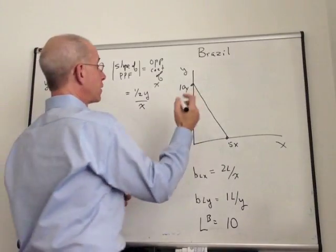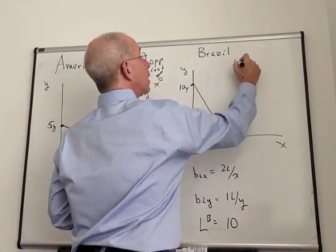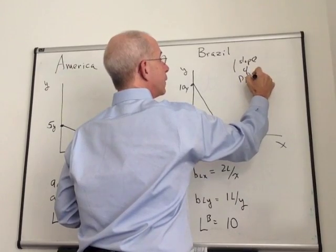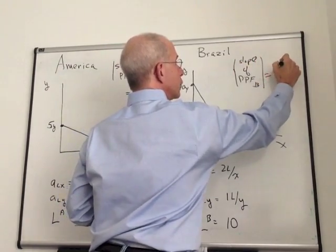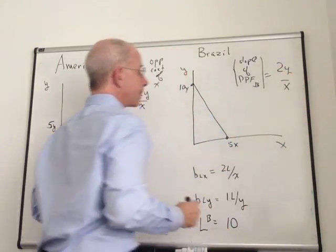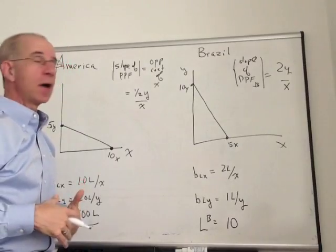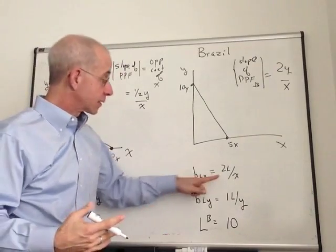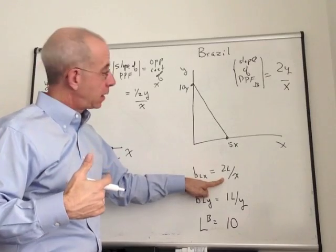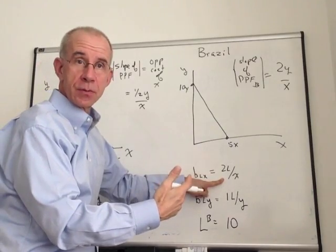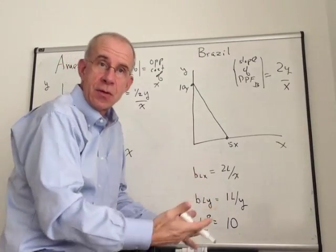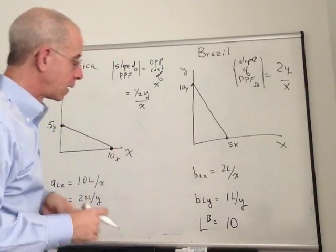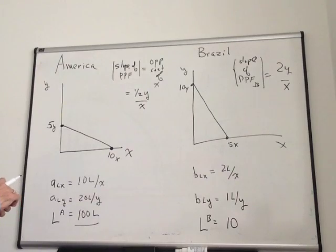We have the slope of the PPF for country B, Brazil. You're going to give up the opportunity to produce 2 units of Y for every X. It takes 2 workers. It's going to take twice as many workers to produce X as it does Y. So the opportunity cost is twice, or is equal to 2Y for every X.